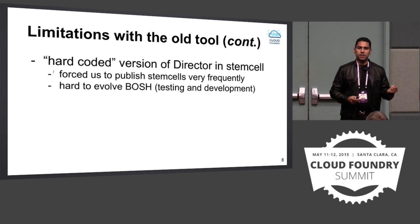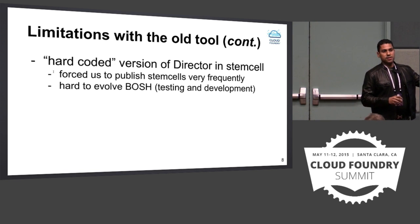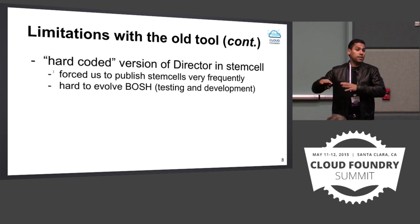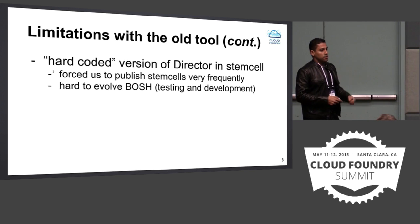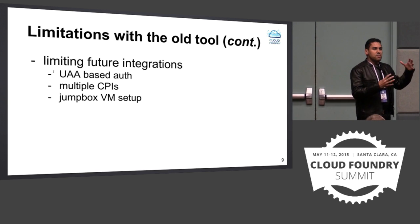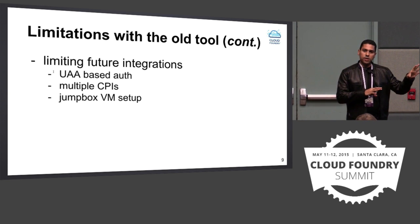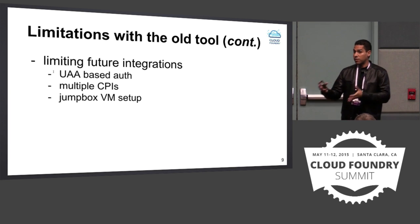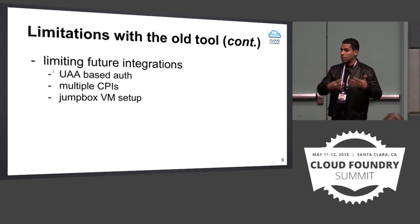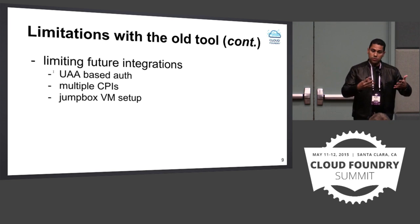In BOSH init, one of the big things we did is externalize the CPIs. As you saw in the manifest, there's a section where you can specify the CPI. That CPI exists as a binary - it's a completely different piece of code and can be written in whatever language you want. That makes it better for development, testing, and so on. Another part was that before you couldn't really combine different releases. As you saw in the demo, the manifest included not only the BOSH director but also UAA, which is a component of Cloud Foundry. UAA can be useful for other things because this is where you'll have essentially the users for your BOSH director.